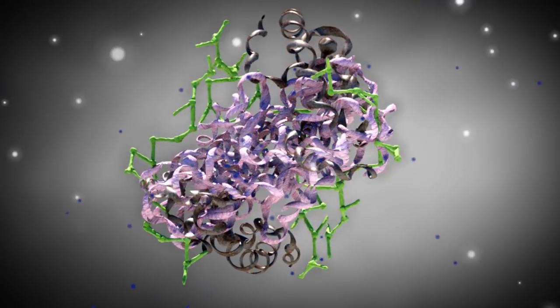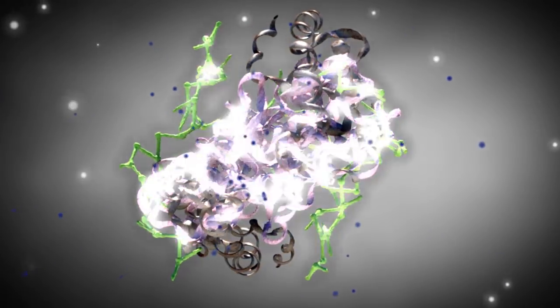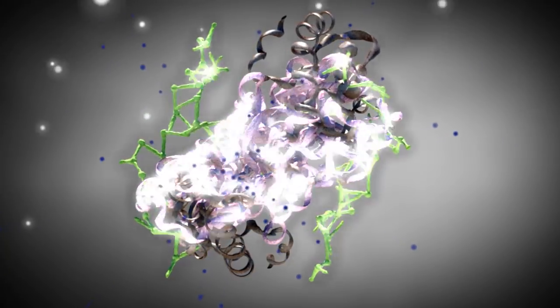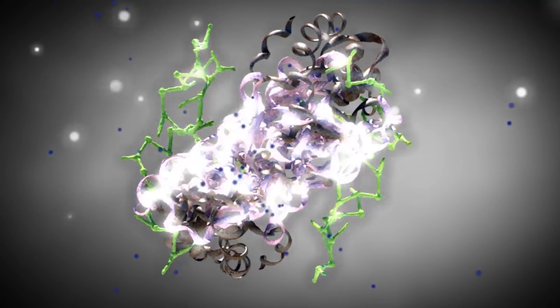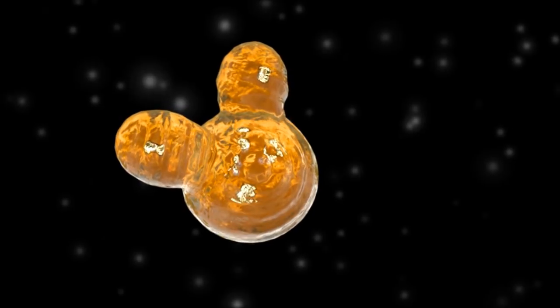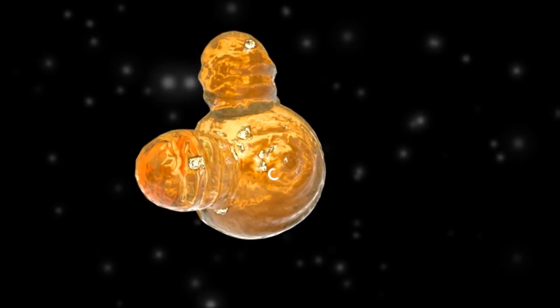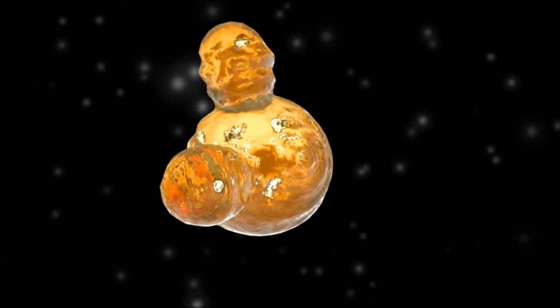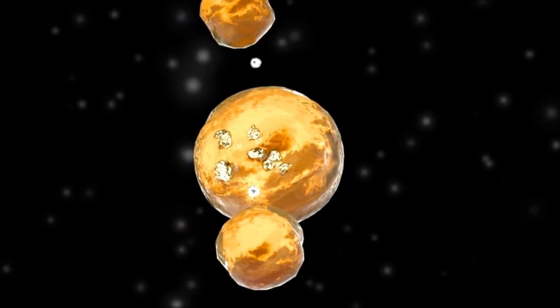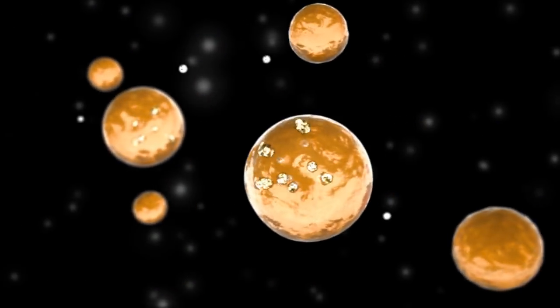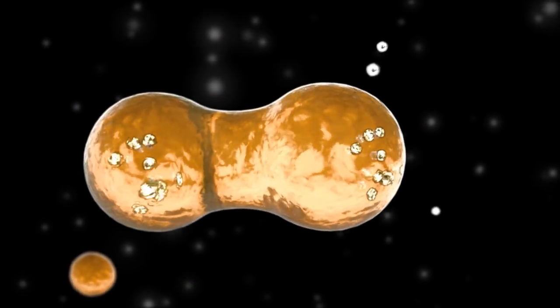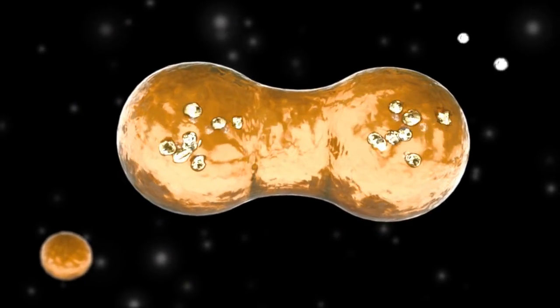To absorb other photons, the molecule must return to its initial state. Therefore, it is in need of electrons. To get them, the PS2 uses water. Here, electrons are ejected from H atoms and the H atoms are separated from the O atom. This happens several times and, as a result, two O atoms combine to form an oxygen molecule that will be emitted later by the leaf. Simultaneously, the positively charged hydrogen ions get into the lumen.